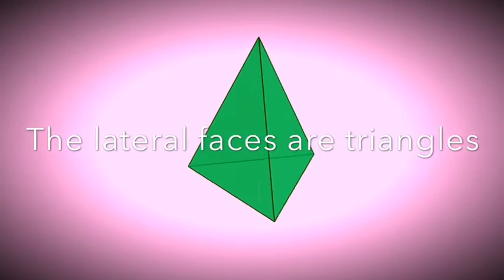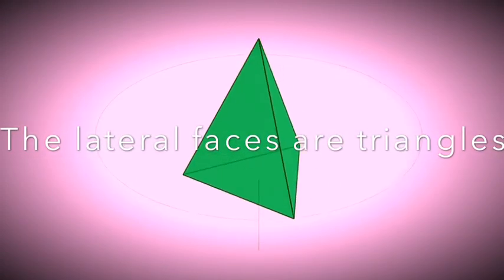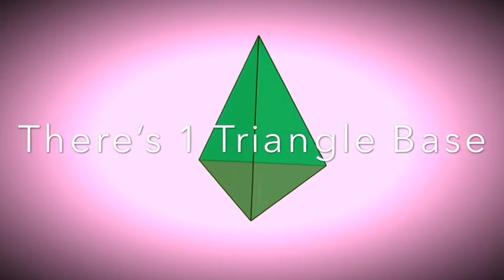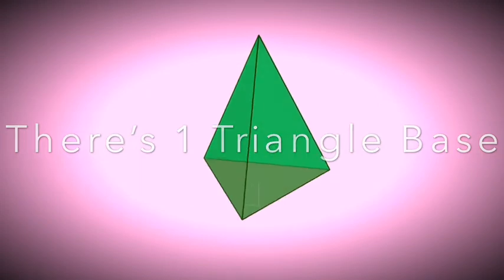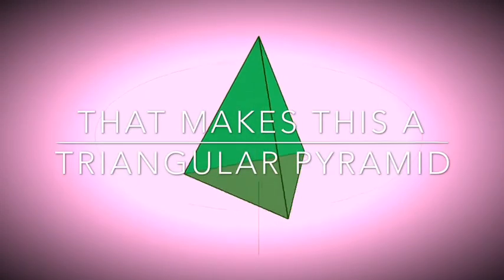In this example, the lateral faces are also triangles. There are three of them. There is one triangular base at the bottom. The triangular base with three triangle faces would be a triangular pyramid.